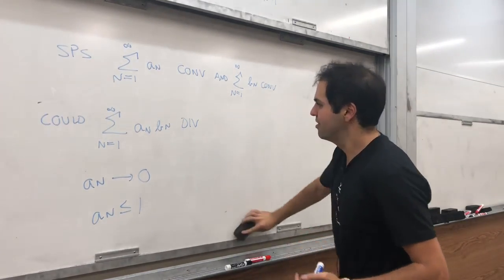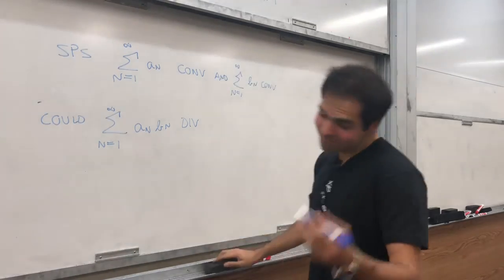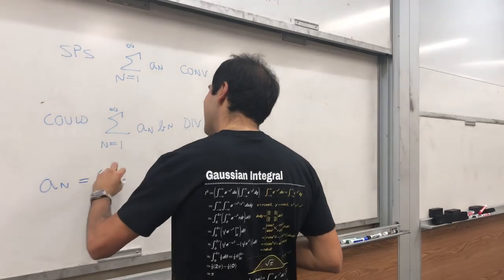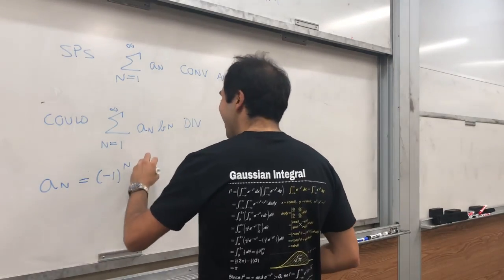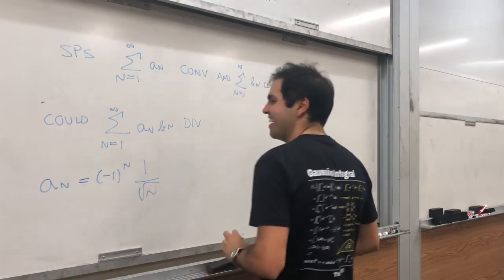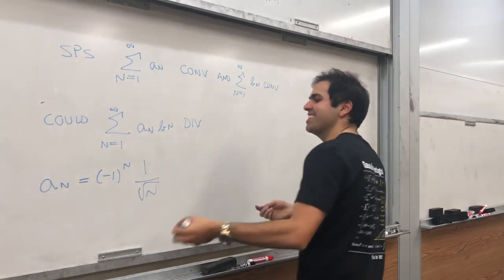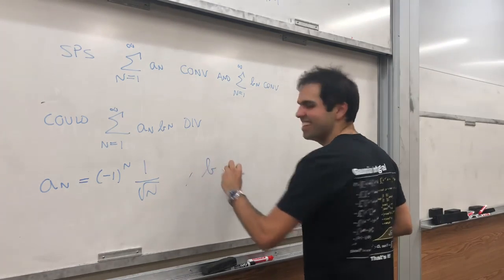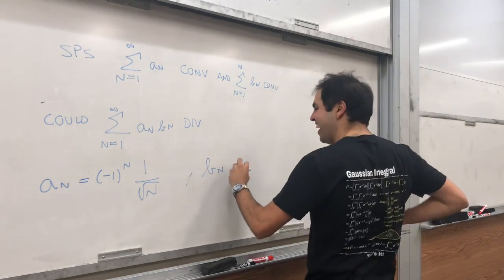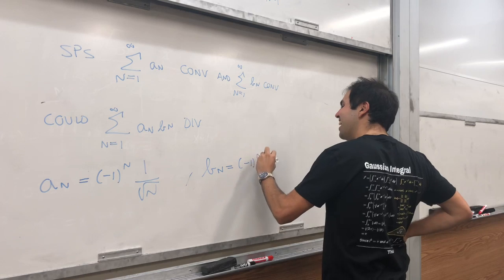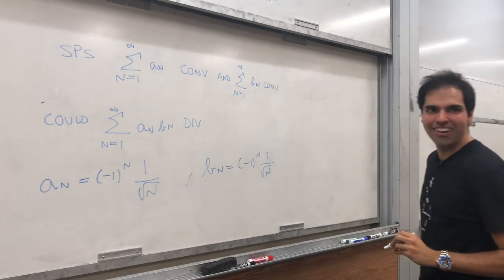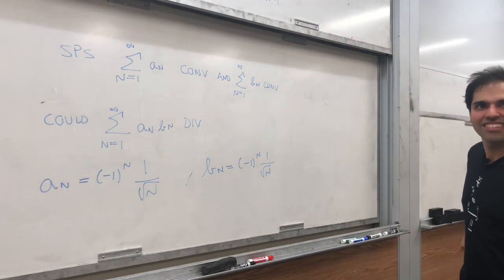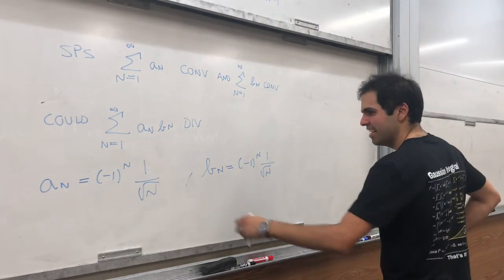Take a_n, b_n, minus one to the n. One over square root of n, right? And converges by the alternating series test. So tricky. Which is interesting. So don't assume everything is positive. Well, I didn't ever say. No, I'm saying if it's positive, then it's true. I told you a_n, b_n could be anything.